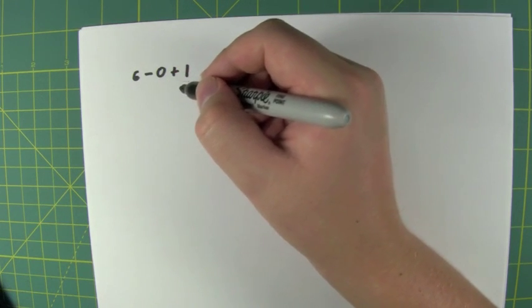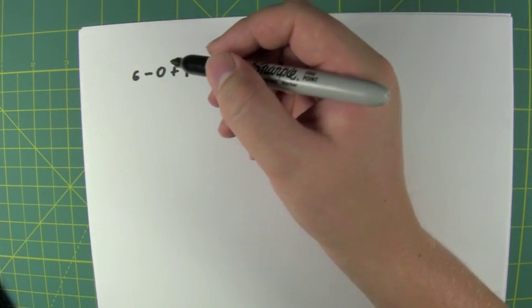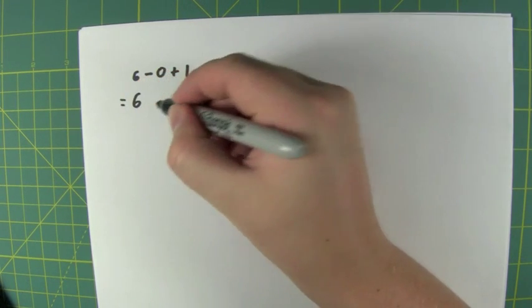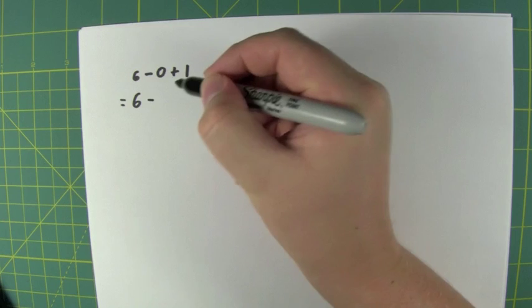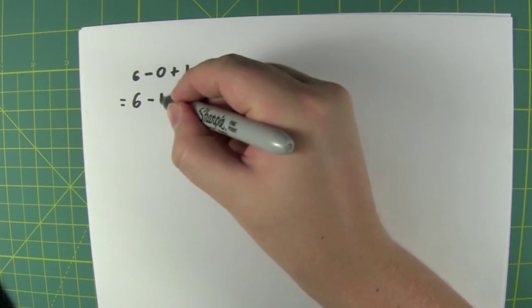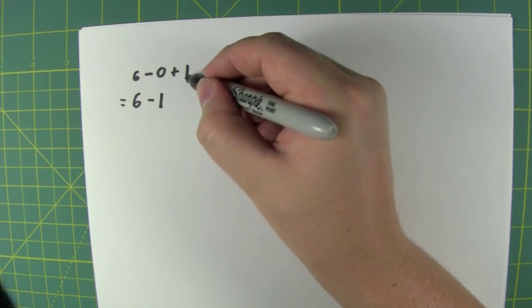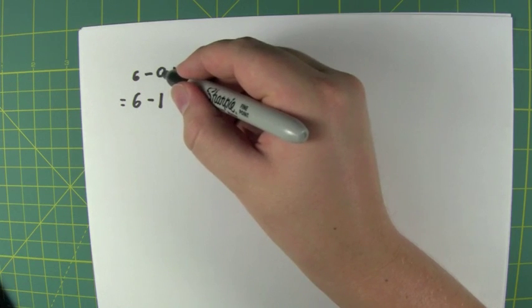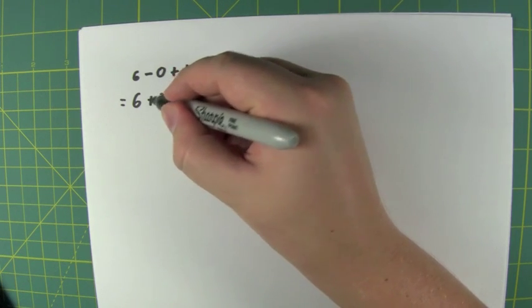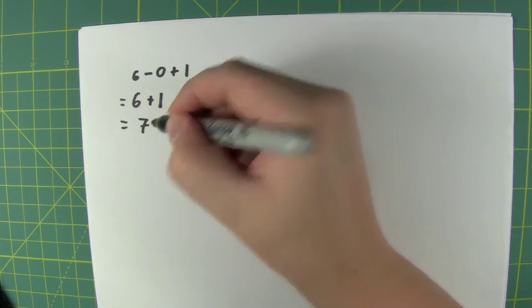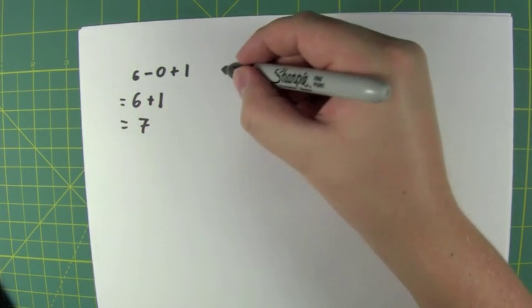Really you can do it all at the same time, especially in this case, but let's just do it in that order. So this is equal to six minus one. But see, when you take this and you add the one to this negative zero here, it becomes positive one, and then of course that equals seven.